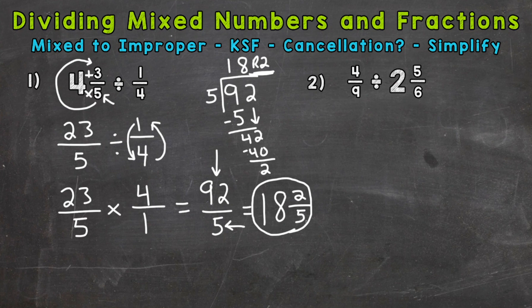On to number 2, where we have a fraction divided by a mixed number. Same steps though. We rewrite the problem with any mixed numbers converted to improper fractions. So we'll keep 4-ninths the same. Divided by. Start at the bottom, work your way up.